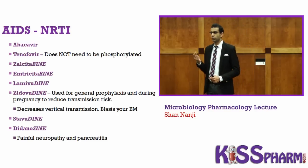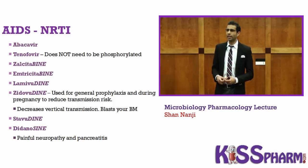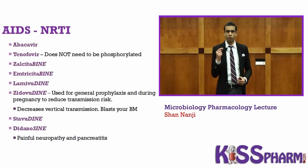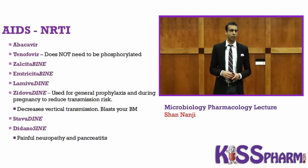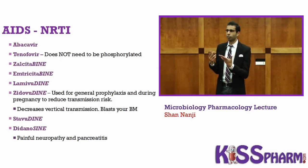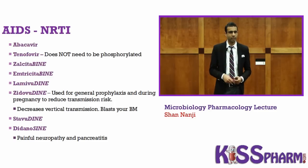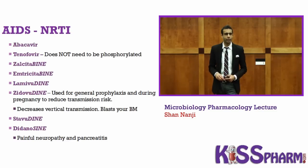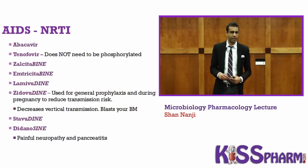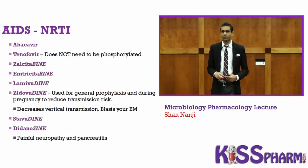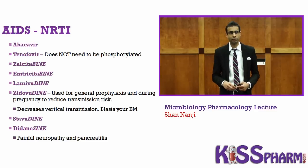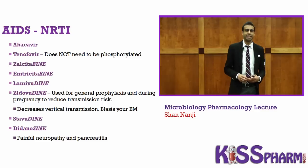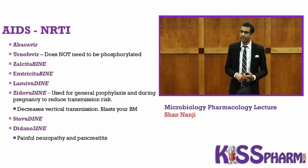There's one NRTI used as general prophylaxis and to decrease vertical transmission risk in pregnant women: zidovudine, also known as AZT. Zidovudine can cause megaloblastic anemia. Then there's didanosine — didanosine causes painful peripheral neuropathy as well as pancreatitis.